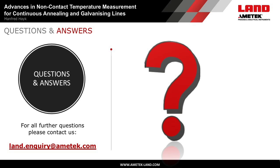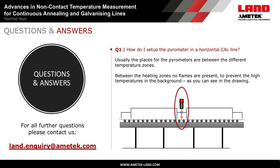Question: How do I set up the pyrometer for a horizontal CAL line? Usually the places for the pyrometers are between the different temperature zones, between the heating zones, where no flames are present, to prevent the high temperatures in the background, as you can see in the drawing.